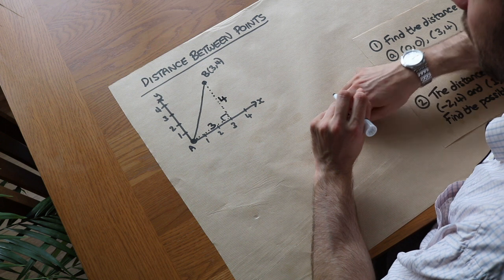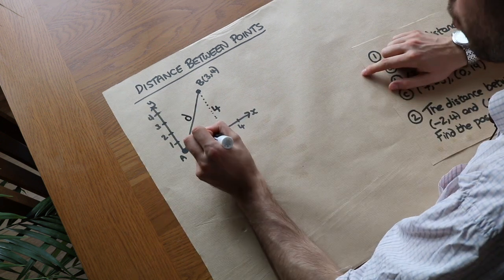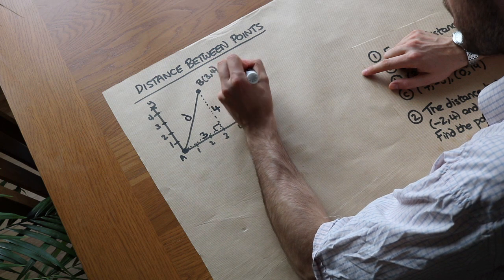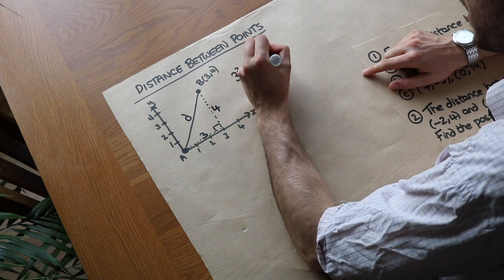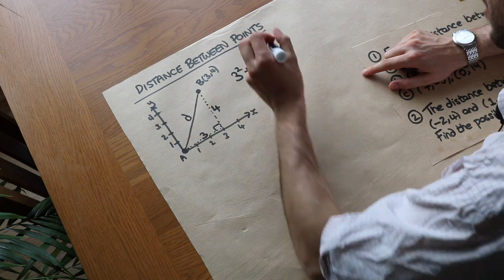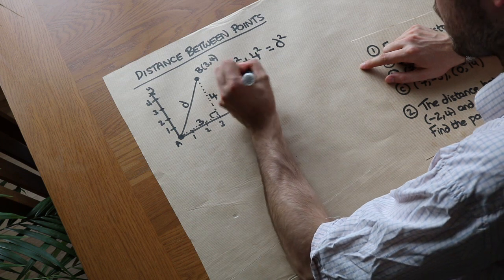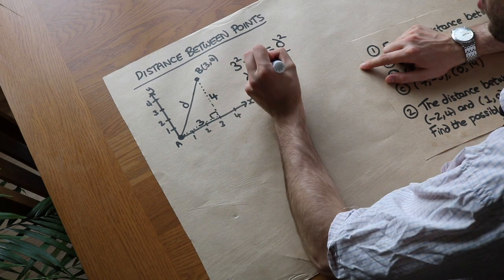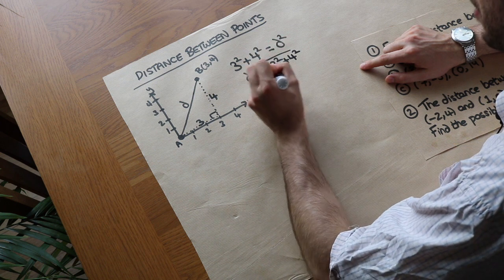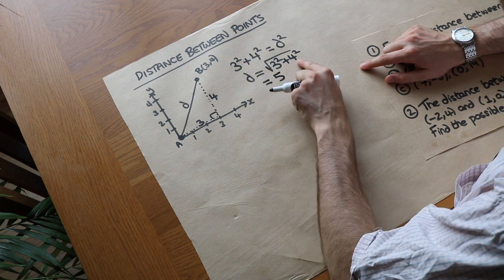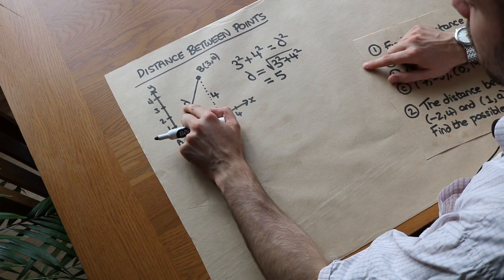And then we can just use Pythagoras theorem. So we know whatever this distance is d, we can do one of the shorter length squared, so 3 squared, plus the other shorter length squared, 4 squared, is equal to that hypotenuse squared, the distance. So if you square root both sides, we have d is the square root of 3 squared, plus 4 squared, and that would give us 5, because that's 9 plus 16 is 25, square root of 25 is 5. So this distance was 5.